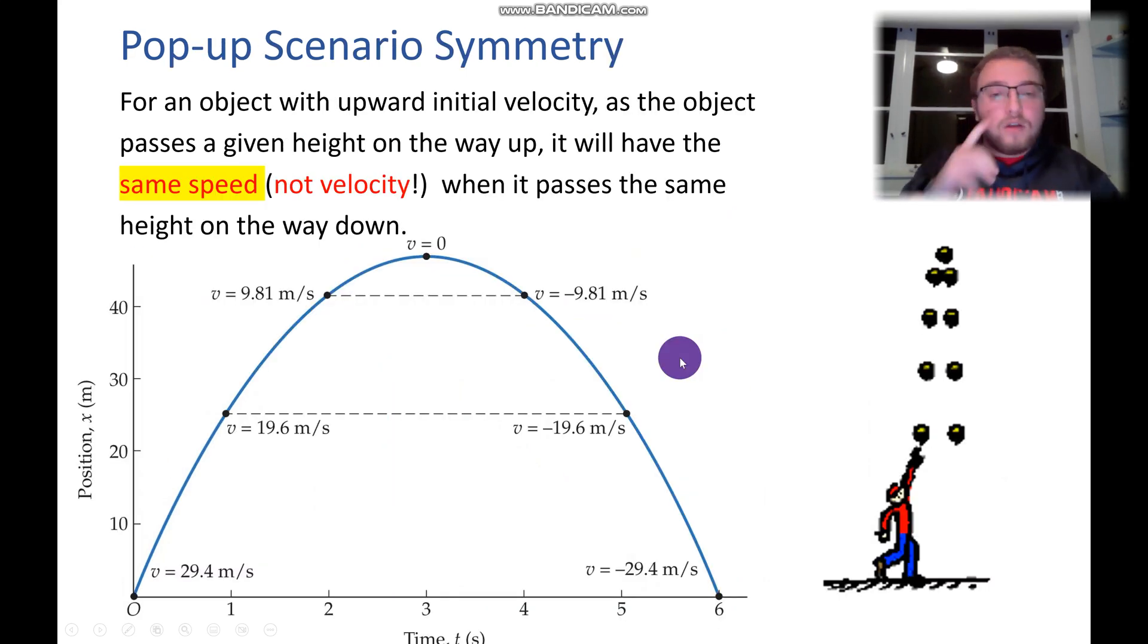So now to describe that in a little bit more detail, if we throw an object with an initial velocity of 29.4 meters per second, then at the end of its journey, it will be going negative 29.4 meters per second.